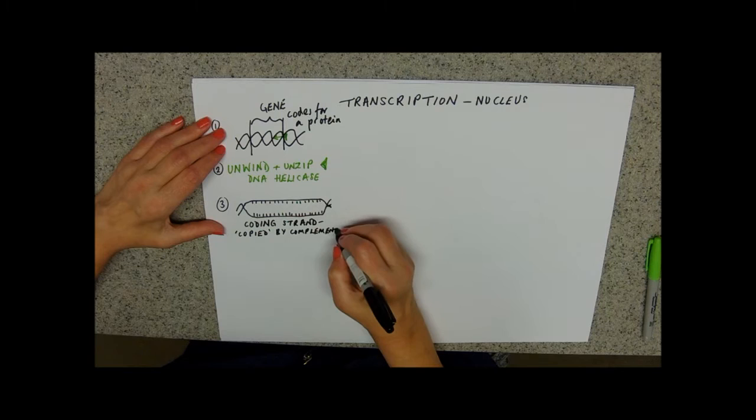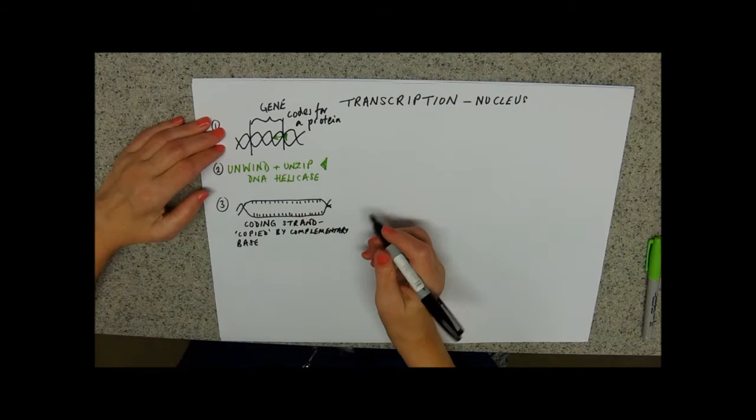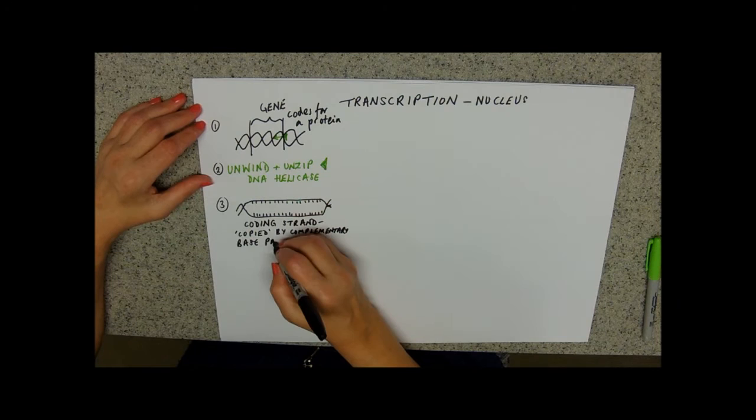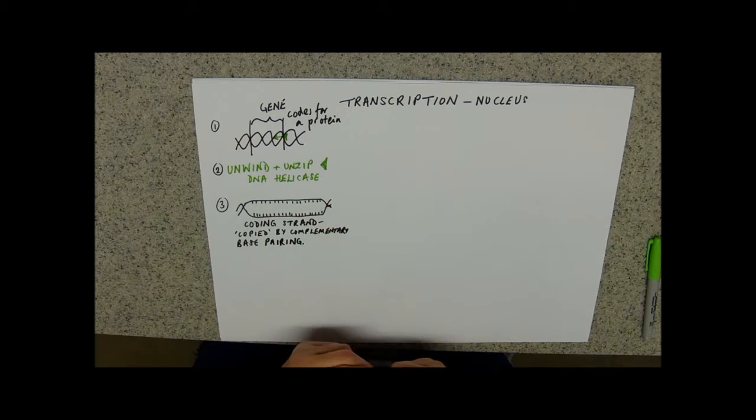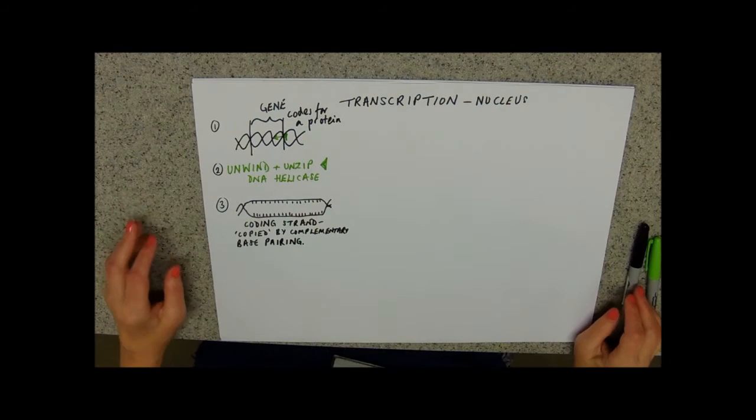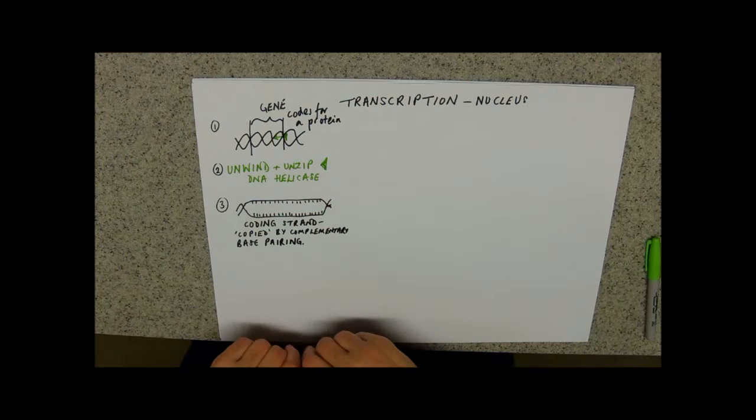Now, it's quite easy to confuse this because we've started with unzipping and unwinding and complementary base pairing. It's quite easy to then start to get confused with DNA replication. If I was you, I'd do your stuff in two different colors. Or do them on different colored cards. Or use a different colored pen. Use a different mechanism for learning them. But don't get them confused.